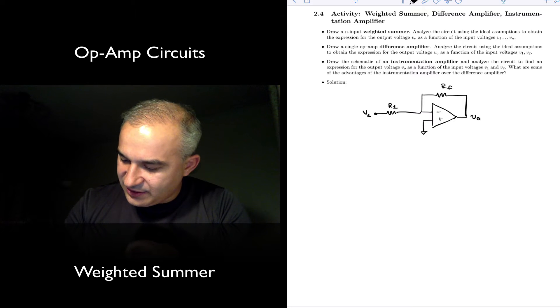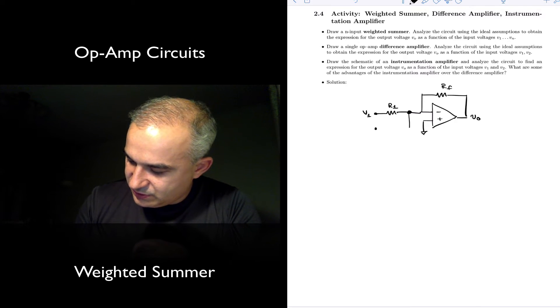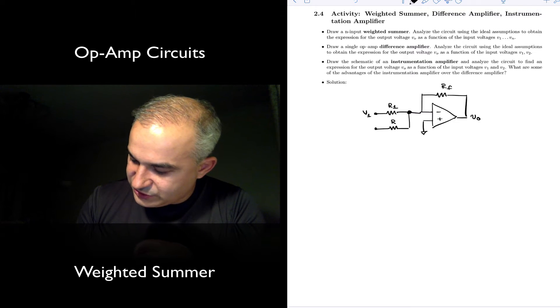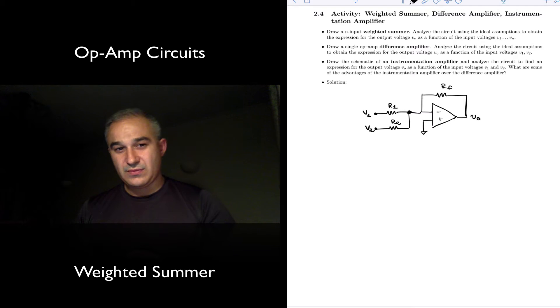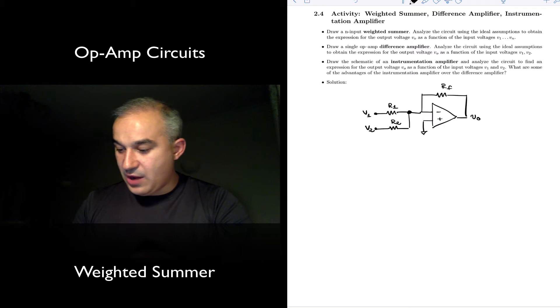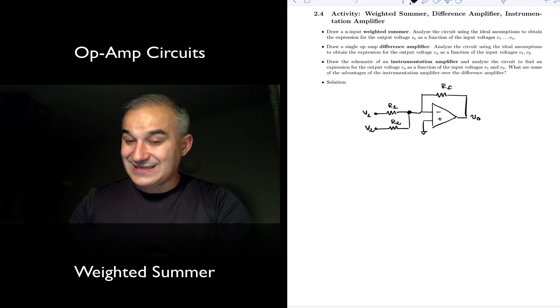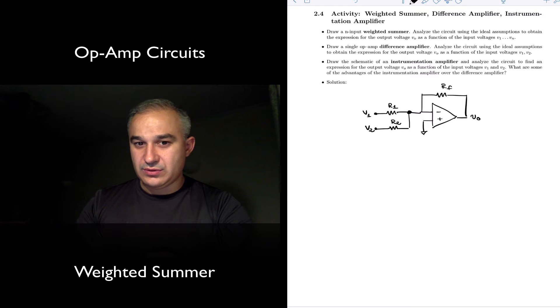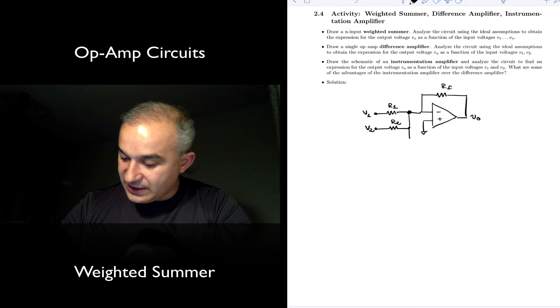Well, what about if we were to add here another input with resistor R2 and voltage V2. If you apply superposition and you ground V1, the output is going to be minus RF over R2 times V2. And you could continue doing that.